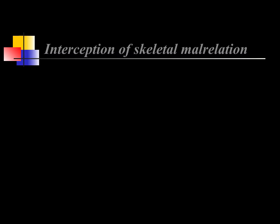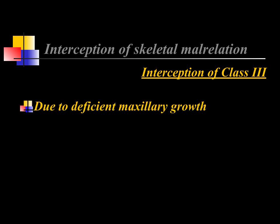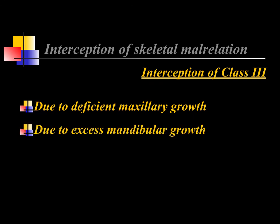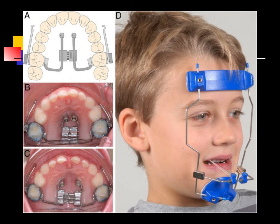Similarly, class 3 malocclusion must be intercepted — whether the maxilla is deficient in growth, the mandible is growing too much, or both. A face mask appliance takes support from the forehead and chin with elastics pulling the maxilla forward; palatal expansion with a screw loosens and widens the maxilla for easier forward movement. Alternatively, if only the mandible is at fault, a chin cup can be used. Detailed coverage will be in the orthopedic and myofunctional appliances lecture.